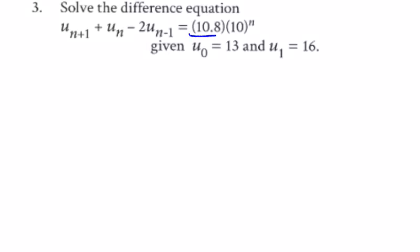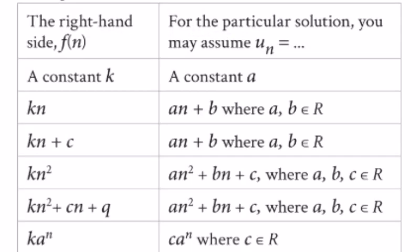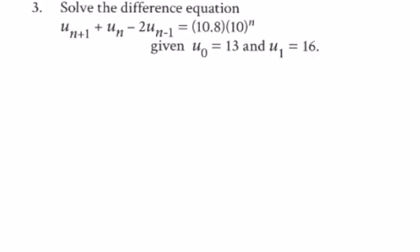For question three, we look at the right-hand side, which is 10.8 times 10 to the power of n, which equals k·a^n. We assume the particular solution u_n equals c·a^n. So u_n = c·a^n, and we could replace a with 10 later. Then u_{n+1} = c·a^{n+1}, and u_n = c·a^n.